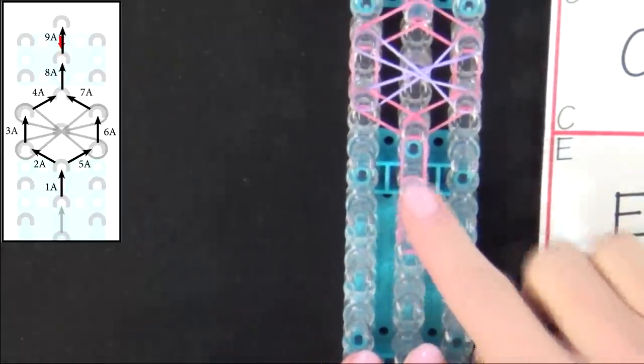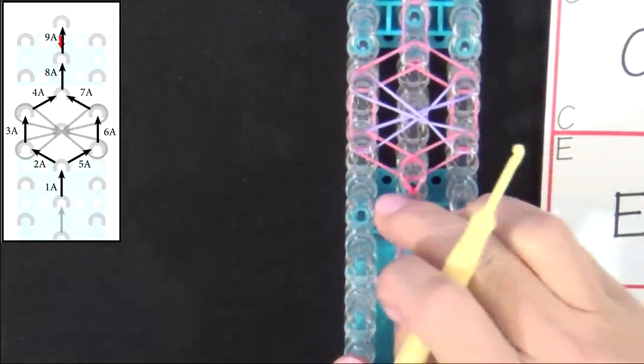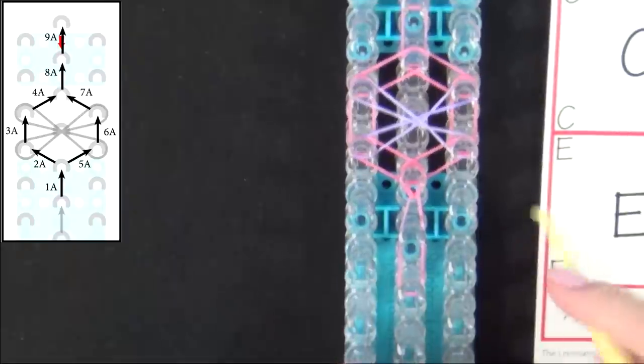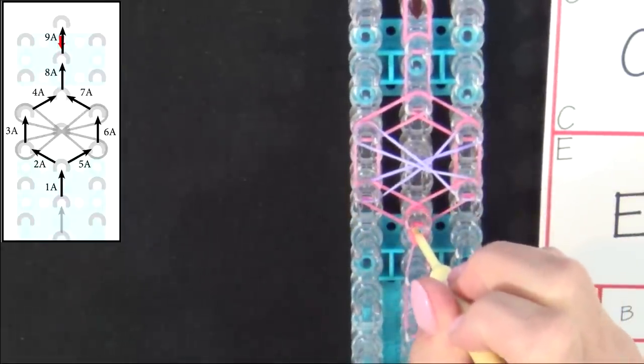We'll start from right here. And we'll loop band 1A. Loop out to the left. That will be band 2A.